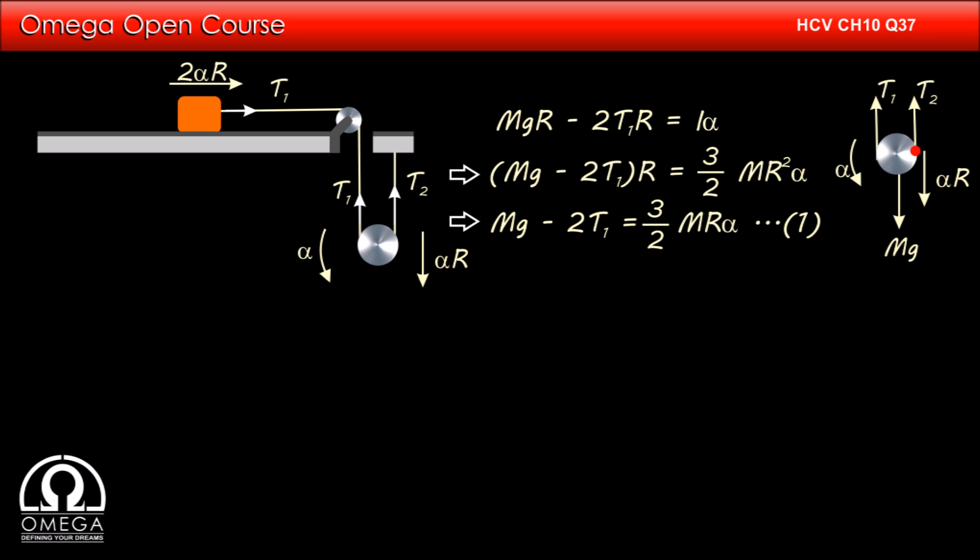Now, let us draw the free body diagram of the block. The only force acting on it in horizontal direction is T1 and its acceleration is 2 alpha r. Therefore, T1 is equal to 2m into alpha r.